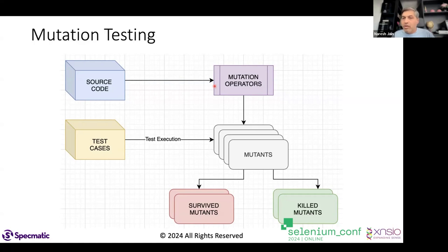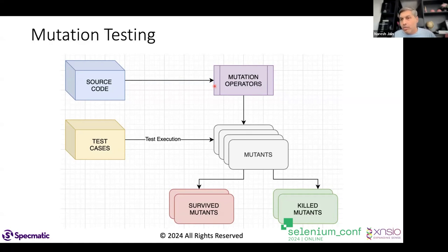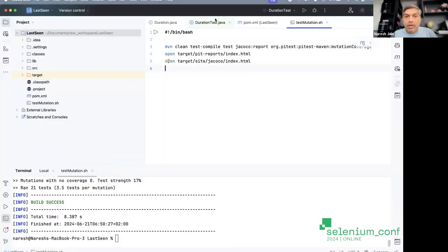If the mutants survive, your tests are no good — they can't catch these intentionally introduced bugs. Ideally, when you run mutation testing with high-quality code and tests, all mutations will be caught. Let's look at a live example: I have a simple class with about five tests that verify a method returning the closest matching duration — like 'last seen one minute ago' in WhatsApp.